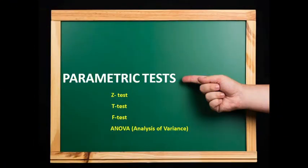Hello friends, today we will discuss the concept of parametric tests and different types of parametric tests such as Z test, T test, F test, and ANOVA. We will also discuss the concept of non-parametric tests and different types such as Chi-square test, Mann-Whitney U test, and Kruskal-Wallis H test. We will also discuss the differences between parametric and non-parametric tests and some key points at the end.